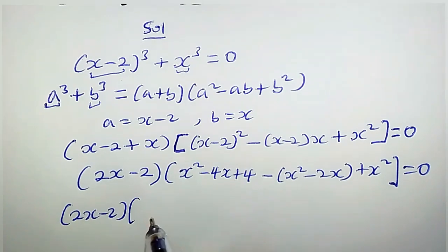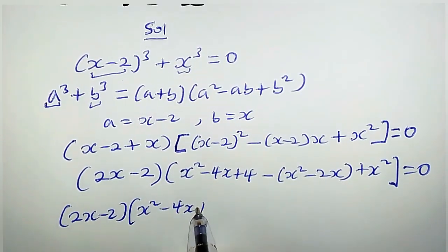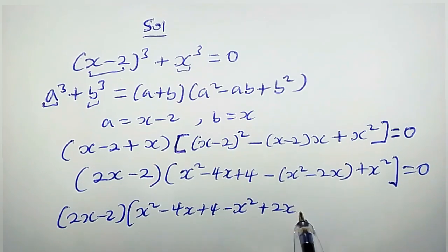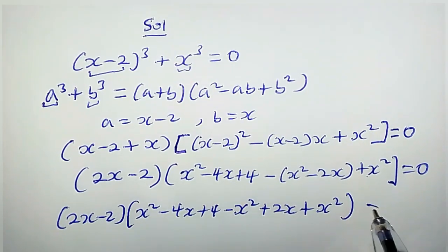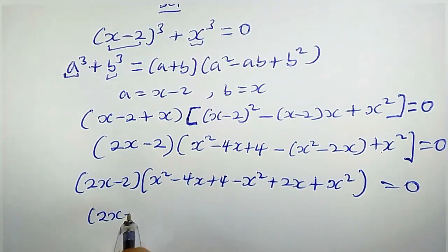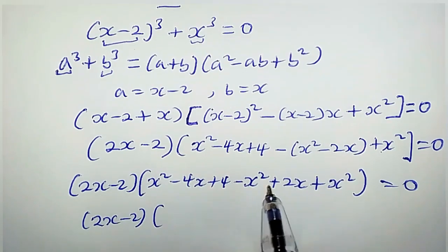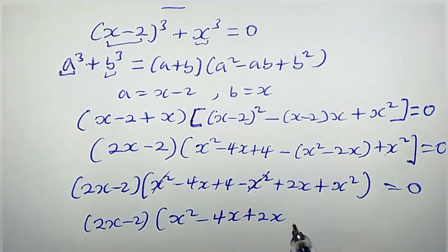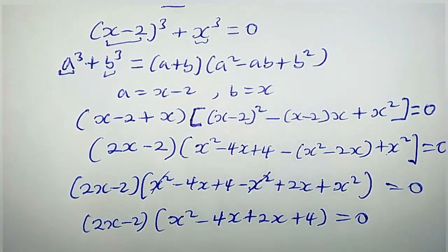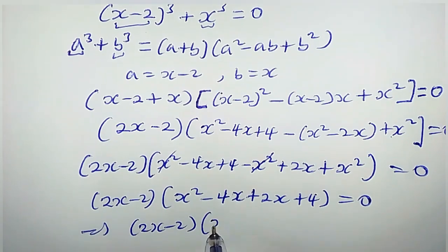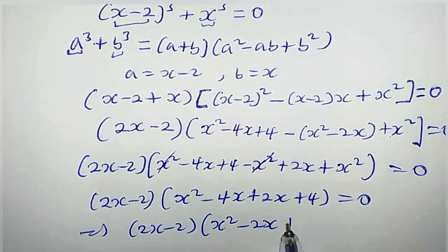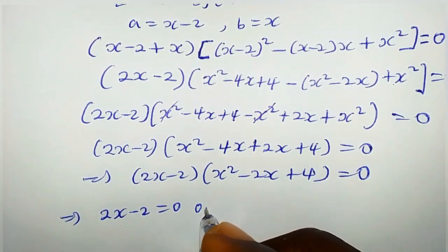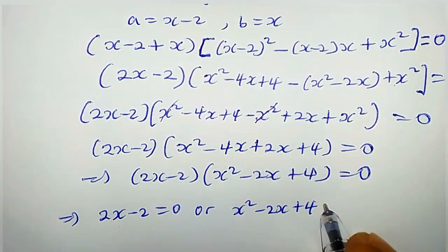We have 2x minus 2 times (x squared minus 4x plus 4 minus x squared minus 2x), plus x squared equals zero. Now let's add the common terms: x plus 2x, and x squared minus x squared cancels. We are left with 2x minus 2 times (x squared minus 4x plus 2x plus 4), which gives us 2x minus 2 times (x squared minus 2x plus 4) equals zero.